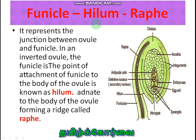Next one is hilum and raphe. The point of attachment of the funicle to the body of the ovule is known as hilum. When the funiculus is adnate to the body of the ovule, it forms a ridge — that ridge is called as raphe.